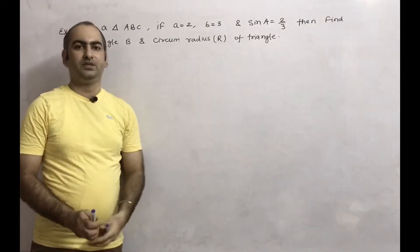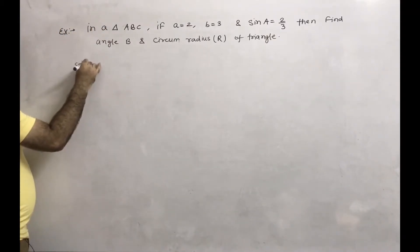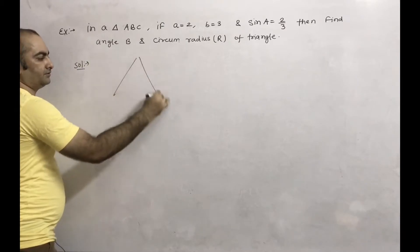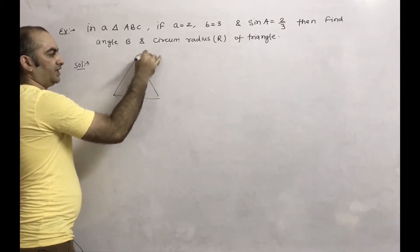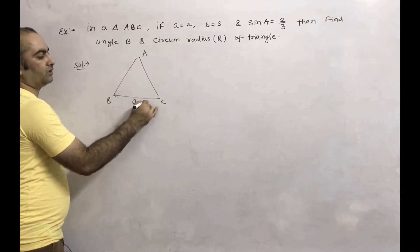Solution: We have a triangle with vertices capital A, capital B, capital C. The opposite side to A is small a, which equals 2. The opposite side to B is small b.